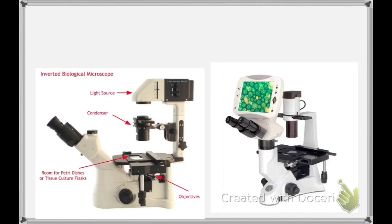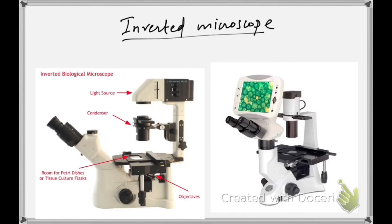Another important equipment used in animal cell culture is the inverted microscope. In a general microscope, there is a light source and a mirror kept at the bottom. The inverted microscope is a little bit different.